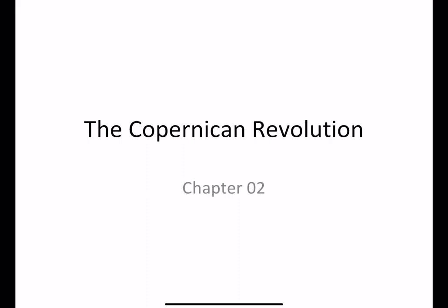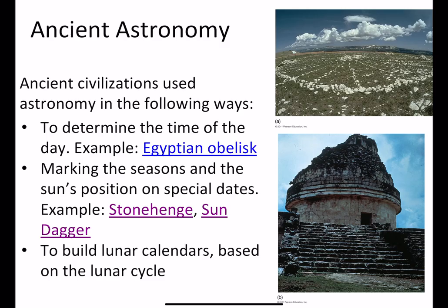In this chapter, we are going to talk about the history of astronomy. This is a very fascinating subject, but we will just have time to barely scratch the surface. Astronomy, as I've mentioned earlier, is the oldest science. Our ancestors have been looking up at the stars and wondering what it all means ever since we have been humans.